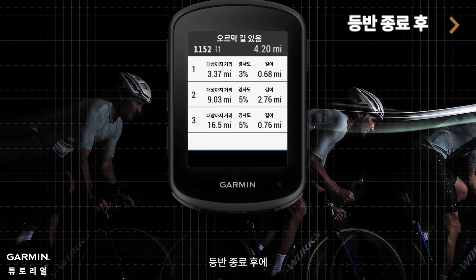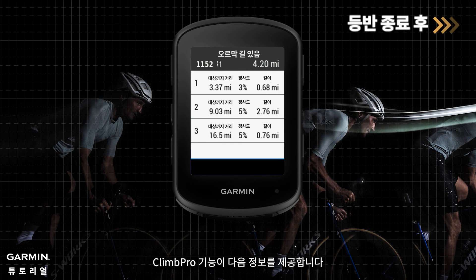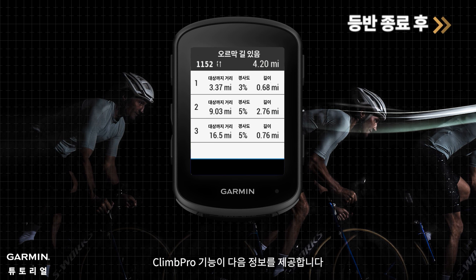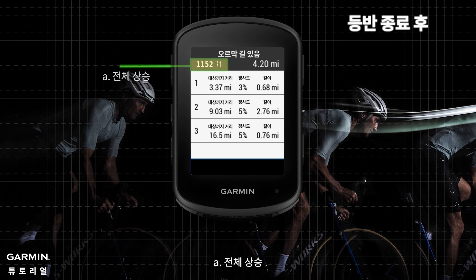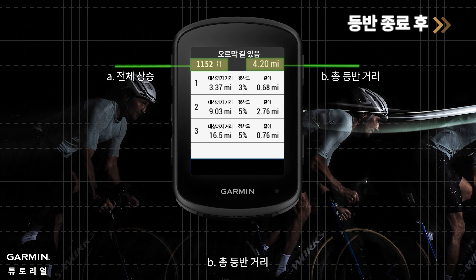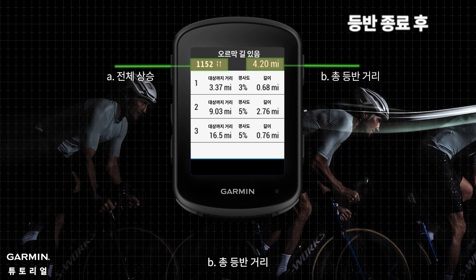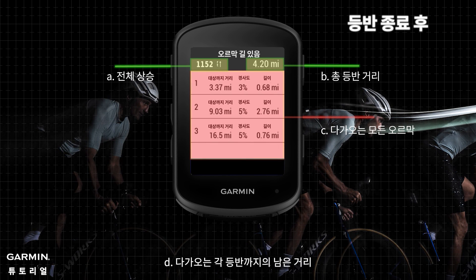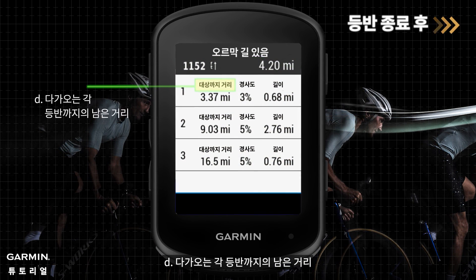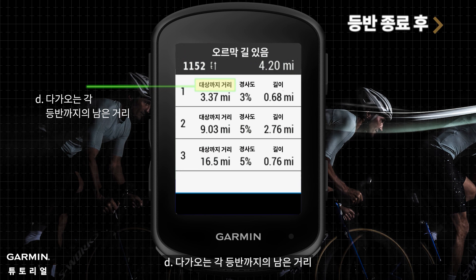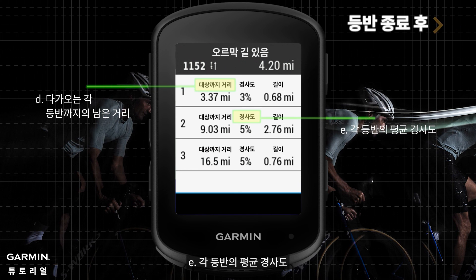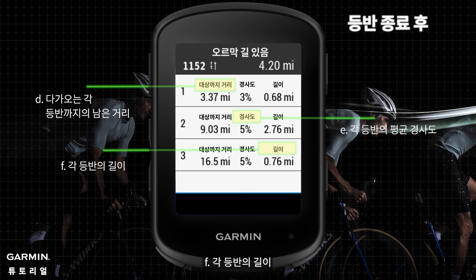When you are out of a climb, the ClimbPro feature will provide the following information: A. The total ascent. B. The total climb distance. C. All upcoming climbs. D. The remaining distance to each upcoming climb. E. The average gradient for each climb. F. The length of each climb.